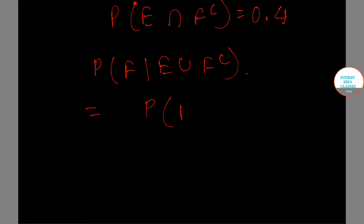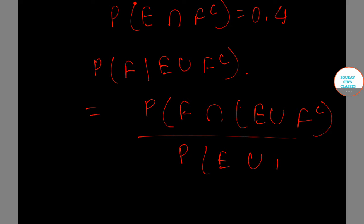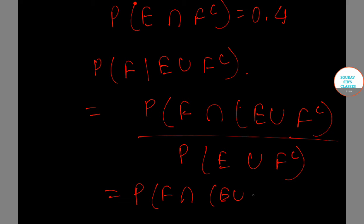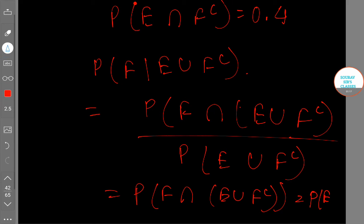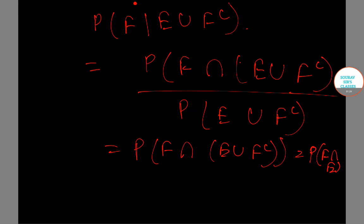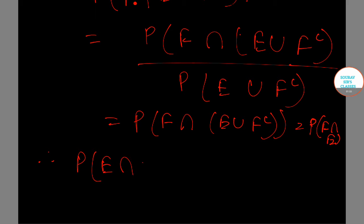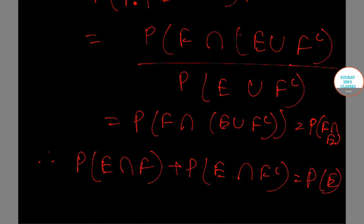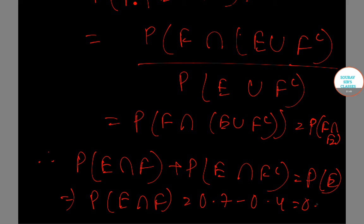This equals probability of F ∩ (E ∪ F') divided by probability of E ∪ F'. Now, F ∩ (E ∪ F') simplifies to F ∩ E. Using the identity: P(E ∩ F) + P(E ∩ F') = P(E), the value becomes P(E ∩ F) = 0.7 − 0.4 = 0.3.